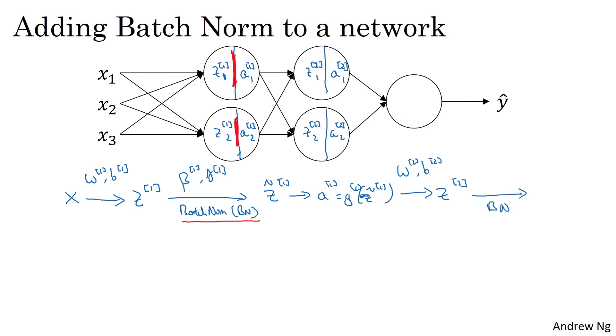I'm going to abbreviate that bn now. This is governed by batch norm parameters specific to the next layer, beta2, gamma2. Now this gives you z tilde 2. And you use that to compute a2 by applying the activation function and so on. The batch norm step happens between computing z and computing a.